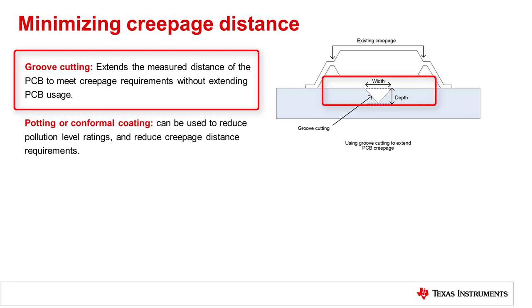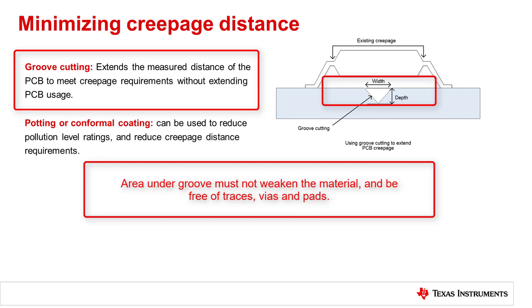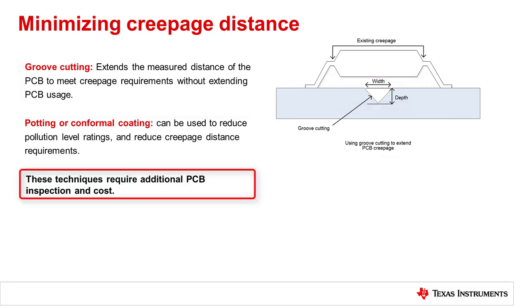For a groove greater than 1 mm wide, the depth requirement is that the existing creepage distance plus the width of groove and twice the depth of the groove must equal or exceed the required creepage distance. The groove must not weaken the substrate to a point that it fails to meet mechanical test requirements, and therefore all layers under the isolator must be free from traces, vias, and pads in order to maintain the maximum creepage distance. While these methods may reduce required distances, they do add cost and are less reliable, and they also have additional inspection steps in PCB manufacturing.